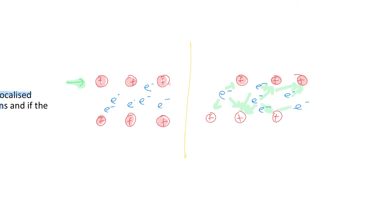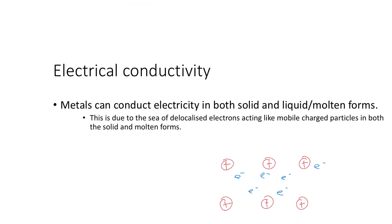So because they're still attracting, you can move that top layer, and all of the attraction will still exist, and so therefore you can change its shape permanently without breaking the substance. So let's have a look. That's malleability.